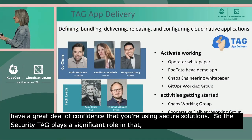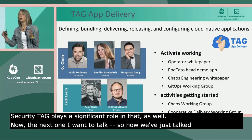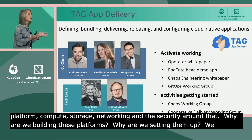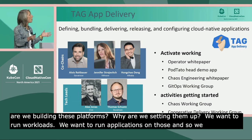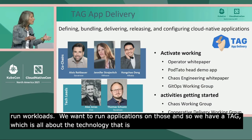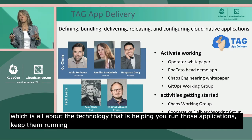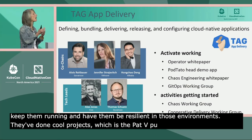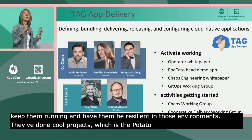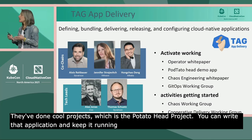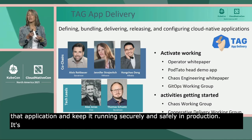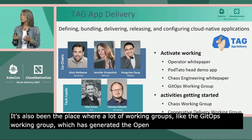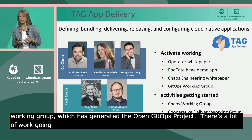Now we've talked about the platform — compute, storage, networking, and the security around that. Why are we building these platforms? Because we want to run applications on them. TAG App Delivery is all about the technology helping you run those applications, keep them running, and make them resilient. They've done cool projects like the Potato Head project — a demo application with a whole bunch of different technologies wrapped around it to show how you can write and keep an application running securely in production. They've also been the place where working groups like the GitOps Working Group were created, which generated the Open GitOps project, a sandbox project. There's also a lot of work around chaos engineering.